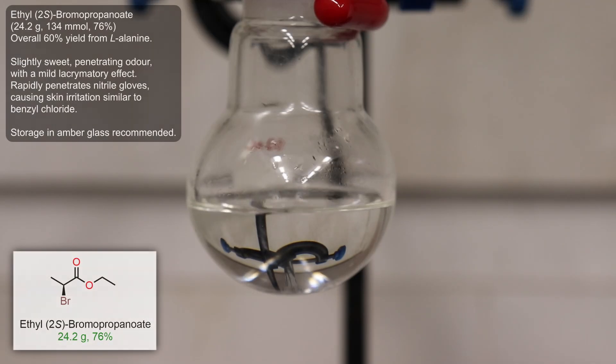In total, I collected 24.2 grams of a clear colorless liquid. This represents a 76% yield from our starting crude 2-bromopropanoic acid, or a 60% yield in total from the starting alanine.